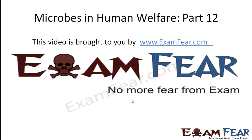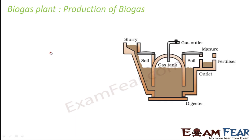Hello friends, this video on microbes in human welfare part 12 is brought to you by examfear.com — no more fear from exam. Let us now talk about the process of production of biogas, how exactly biogas is produced. The microorganism involved in biogas production is methanogens, and they undergo fermentation, as a result of which mostly methane is formed, along with carbon dioxide.